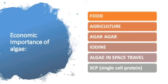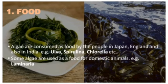The economic importance of algae includes six areas: food, agriculture, agar-agar, iodine, algae in space travel, and single cell protein. In terms of food, algae are consumed by people in Japan, England, and India. Examples include Ulva, Spirulina, and Chlorella. Some algae such as Laminaria and Ascophyllum are also used as food for domestic animals.